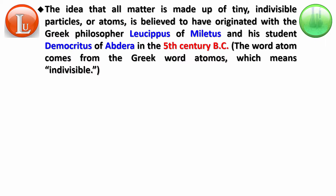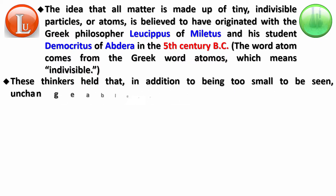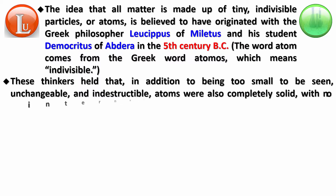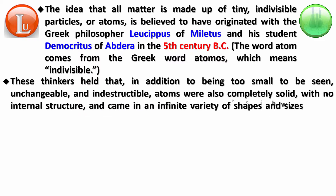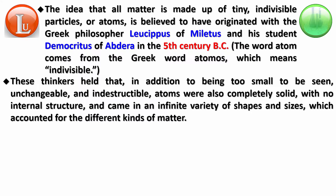The very fact that they could think like this without doing any experiment — which was completely hypothetical — itself talks about the greatness of these people. These thinkers believed that in addition to being too small to be seen, unchangeable and indestructible, atoms were also completely solid with no internal structure and came in an infinite variety of shapes and sizes, which accounted for the different kinds of matter. So they did not restrict themselves to believe atoms were spheres; they said atoms can come in various shapes and sizes.